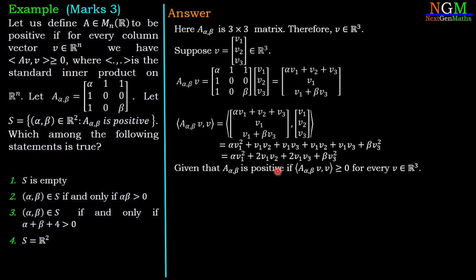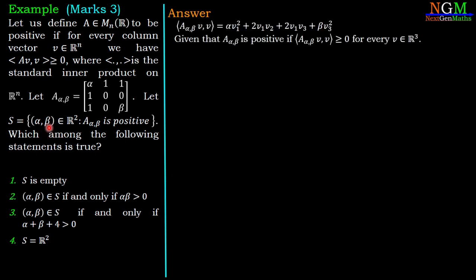A(α,β) is positive if and only if this inner product ⟨A(α,β)v, v⟩ is always greater than or equal to zero for all v in R³. To find which pairs (α,β) belong to S, we need to determine which values of α and β guarantee this condition.